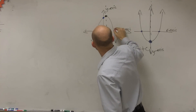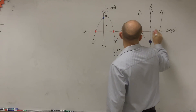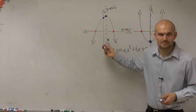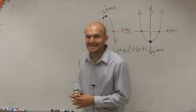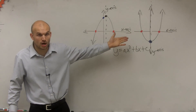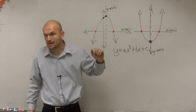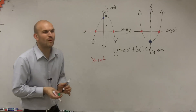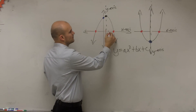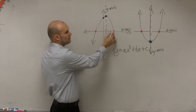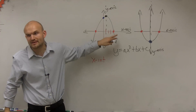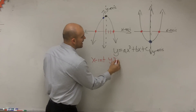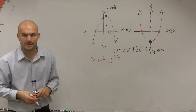Let's make it red for the x-intercepts. So when the graph crosses the x-axis, those are what we call our x-intercepts. Now, here's one thing I want you guys to understand: at the x-intercept, if you go over 1, 2, 3, 4 — this point is 4 comma what? What is the y-value at that point? Zero. So the x-intercept is when y equals 0.